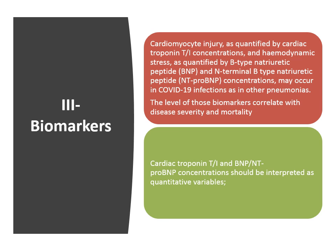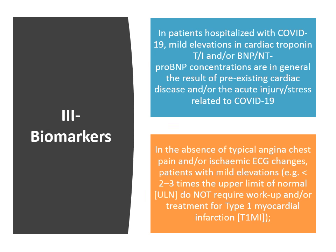The third part of the lecture is the biomarkers. Cardiomyocyte injury as quantified by cardiac troponin concentration, and hemodynamic stress as quantified by BNP and N-terminal pro-BNP, may occur in COVID-19 infection as in other pneumonias. The level of these biomarkers correlates with disease severity and mortality. Cardiac troponin and BNP or N-terminal pro-BNP should be interpreted as quantitative variables. In patients hospitalized with COVID-19, mild elevation in cardiac troponin or NT-proBNP concentrations is in general the result of pre-existing cardiac disease or acute injury related to COVID-19.